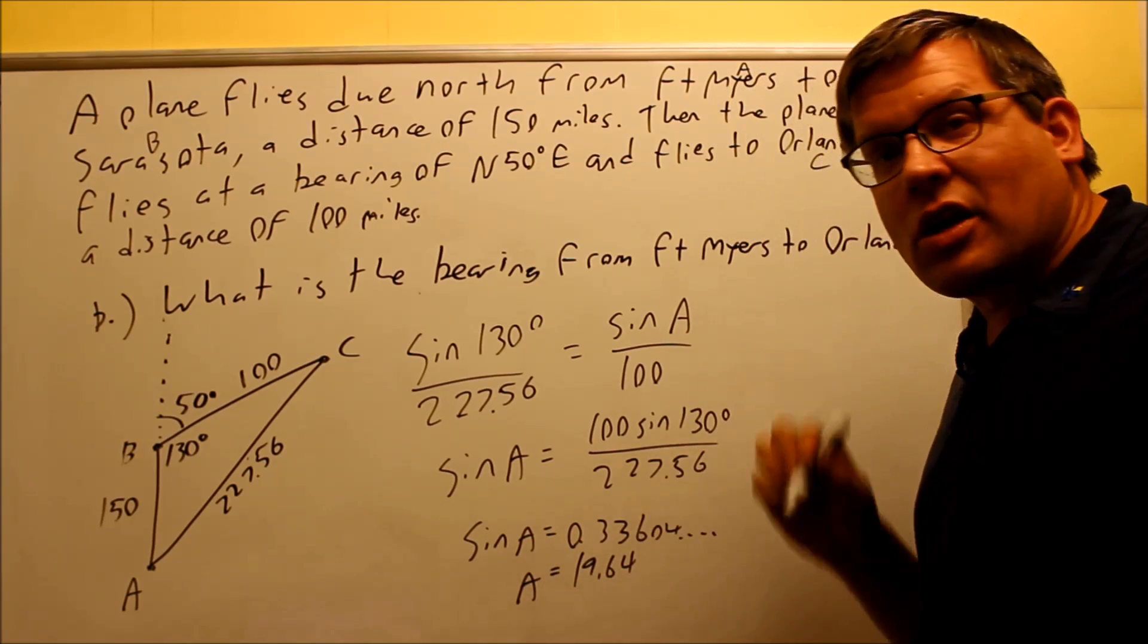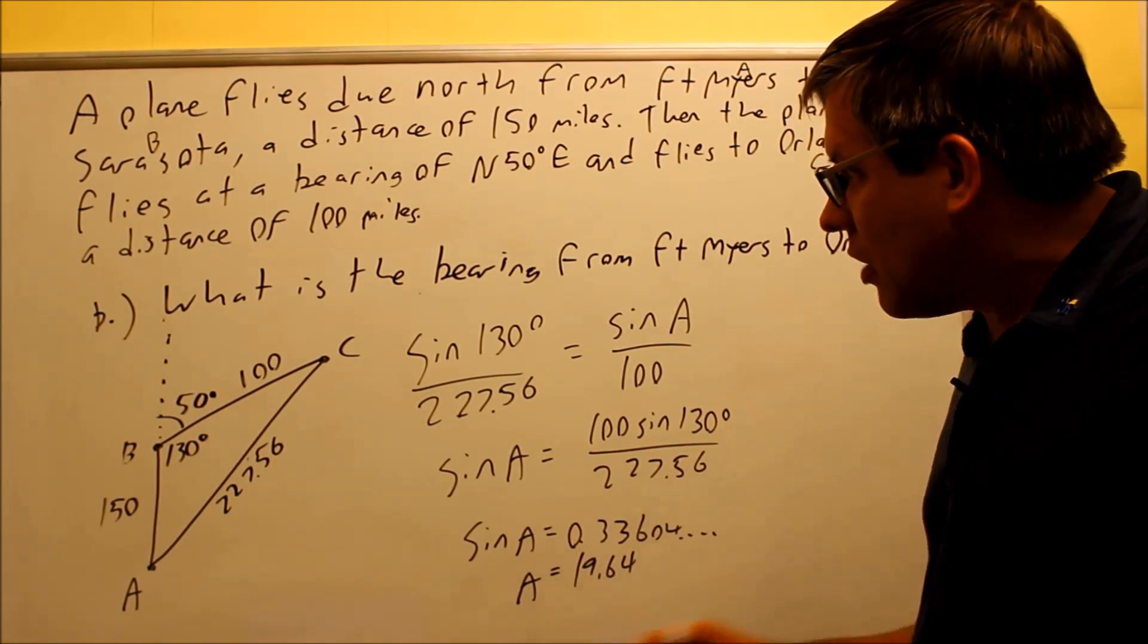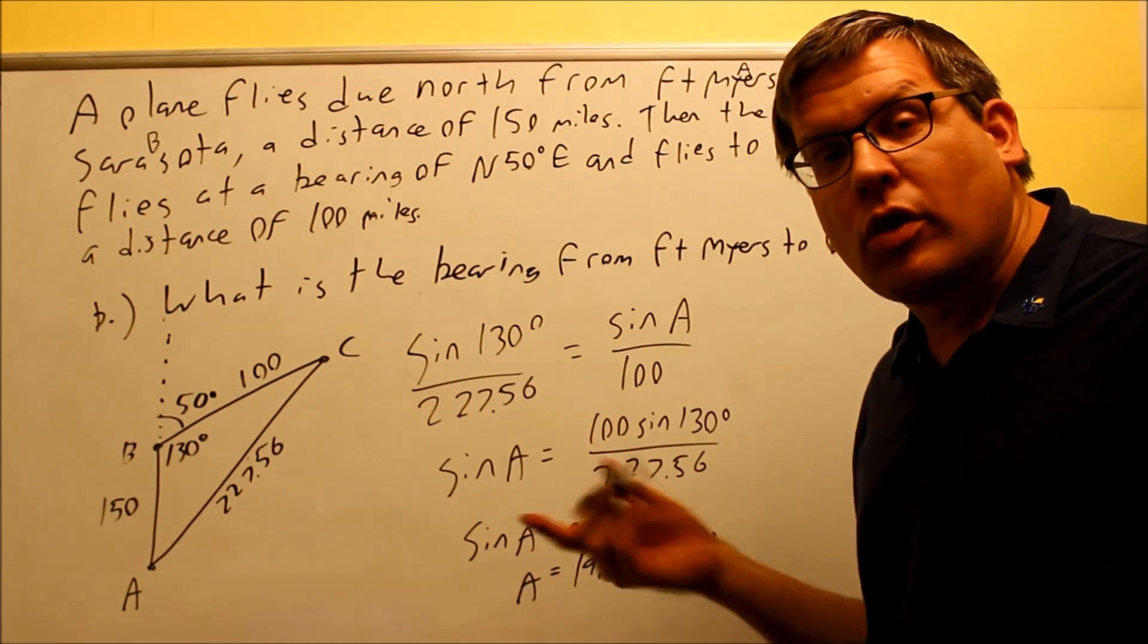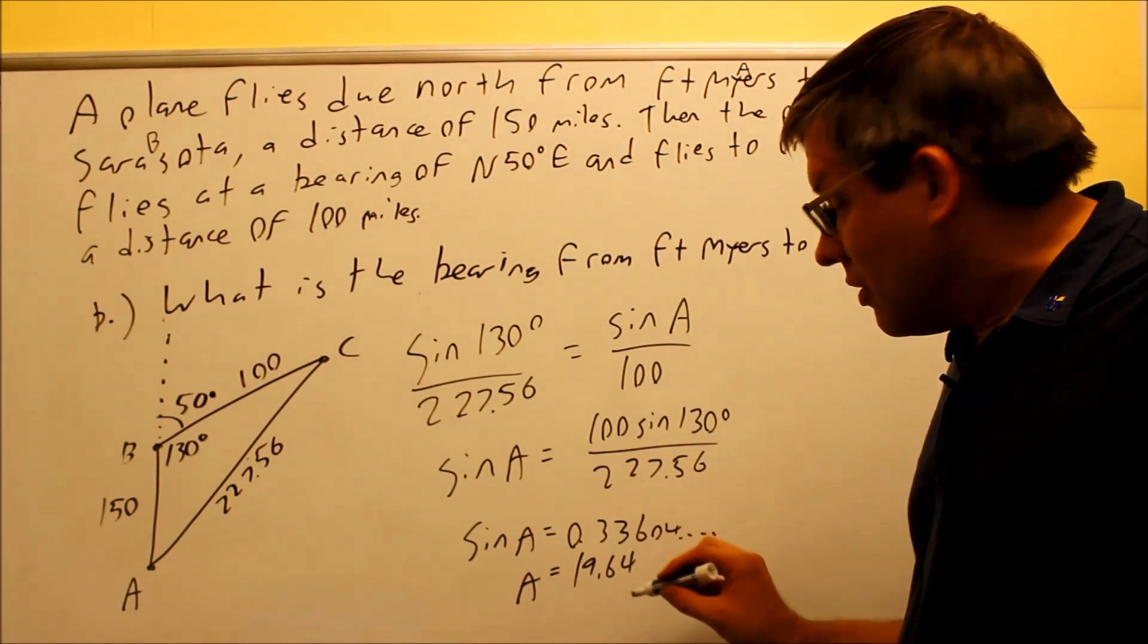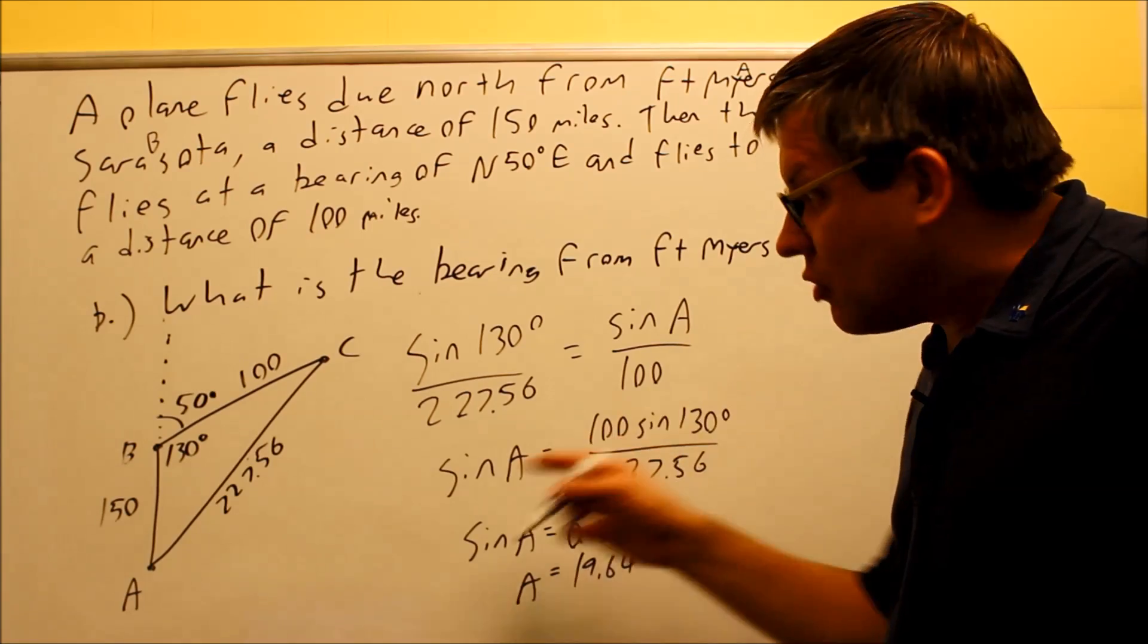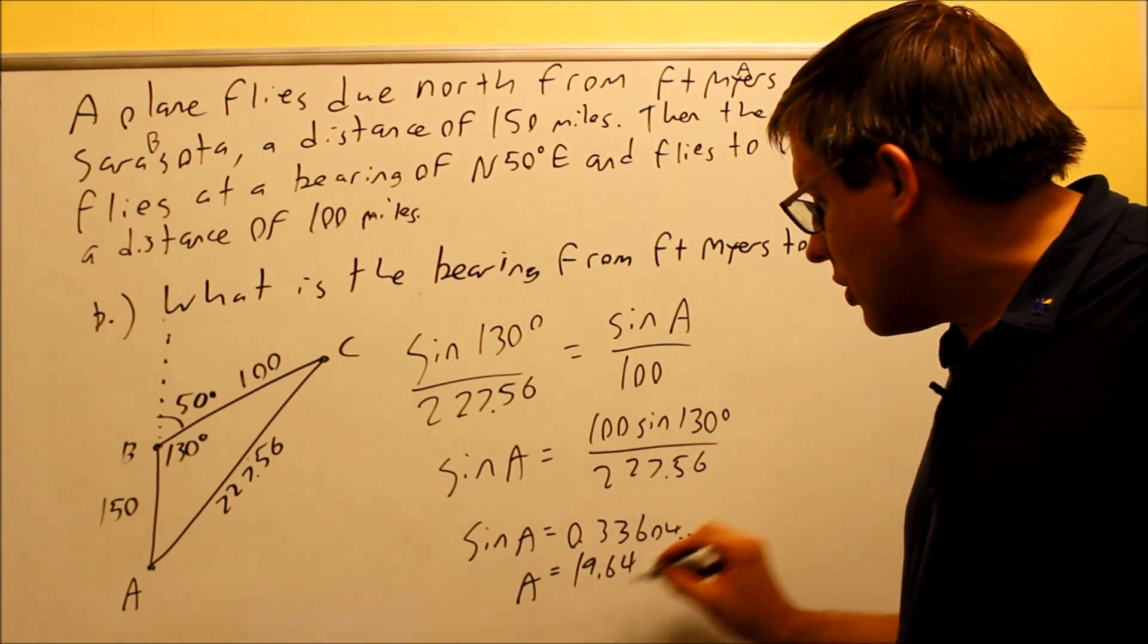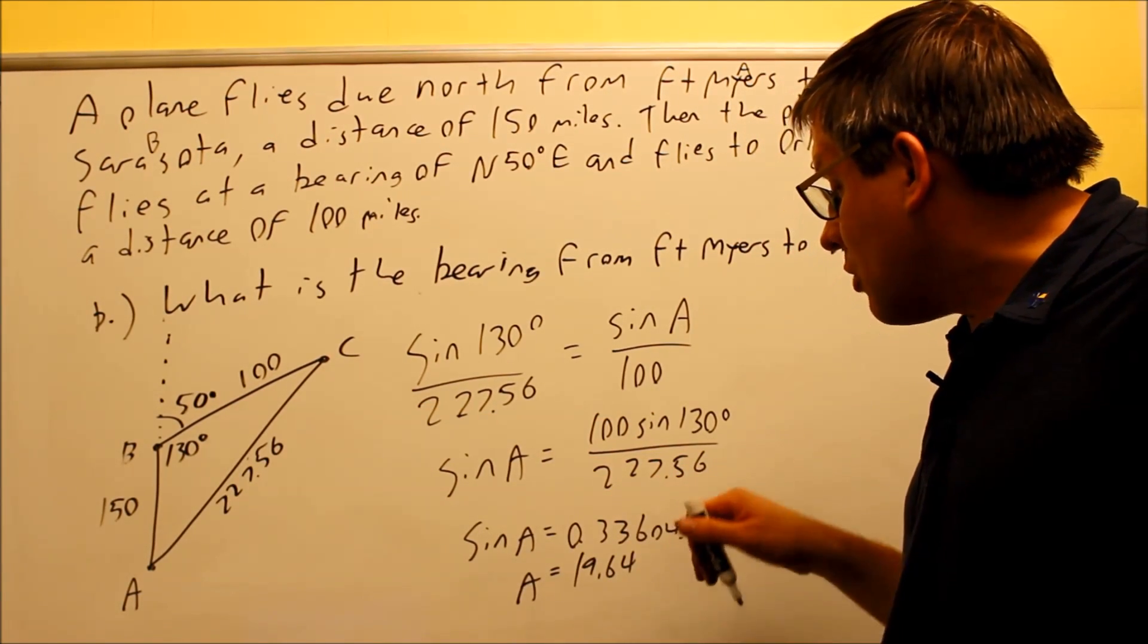You don't need to worry about that secondary solution because, again, as I mentioned, we already have our largest angle in there, 130, so it wouldn't make sense for us to have another answer 180 minus this because it would be too big to fit inside the triangle. So this answer that the calculator gives is going to be correct.